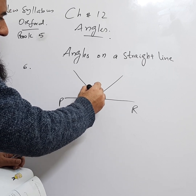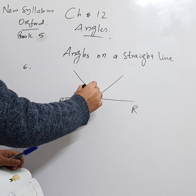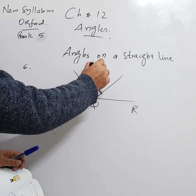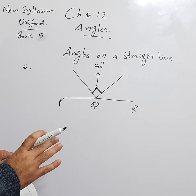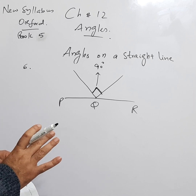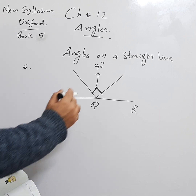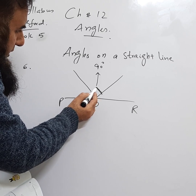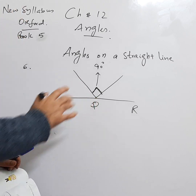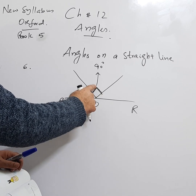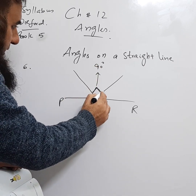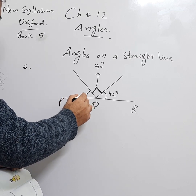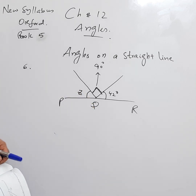When we have this small square sign — like an L — this angle is always 90°. Keep this in mind for all questions related to angles in any grade or class. Whenever an angle is marked with this L sign, it is 90°. So one angle is 90° and this angle is 42°. We need to find z.